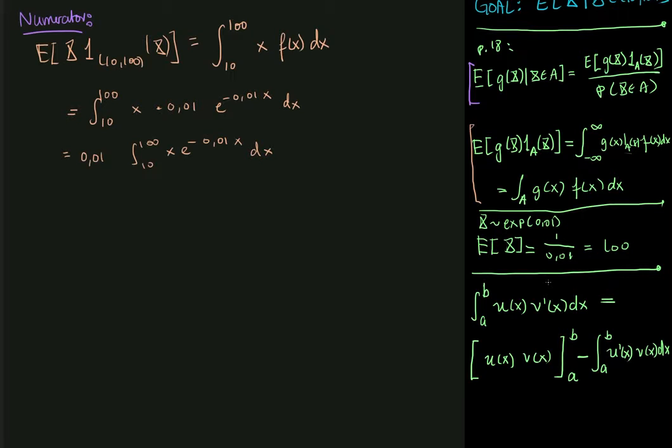So what we need to do here now is we kind of have to recognize what is our u, what is our v prime, what is our 10, and what is our a, and what is our b. So let's say that I let my x be my u of x.